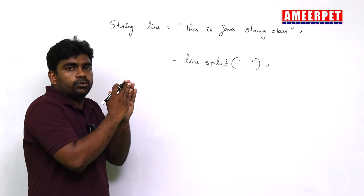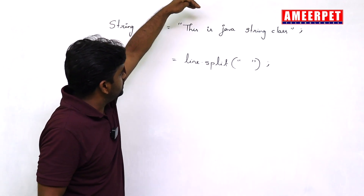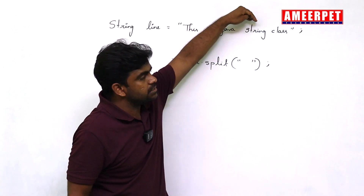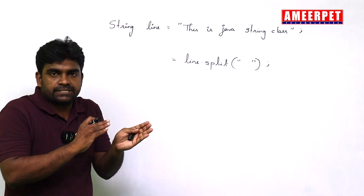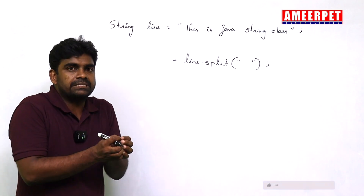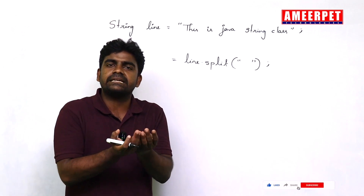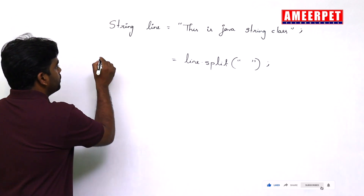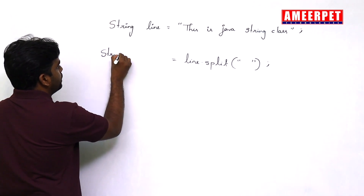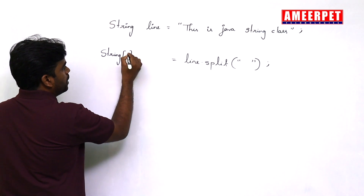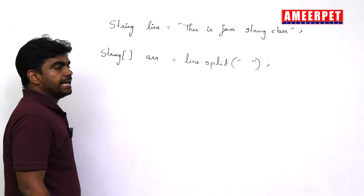The split method will split the string into a number of tokens — nothing but a number of words. 'This', 'is', 'java', 'string', 'class' — each is one string. It will return an array of strings, because multiple strings are returned. All these values will be stored into this array.